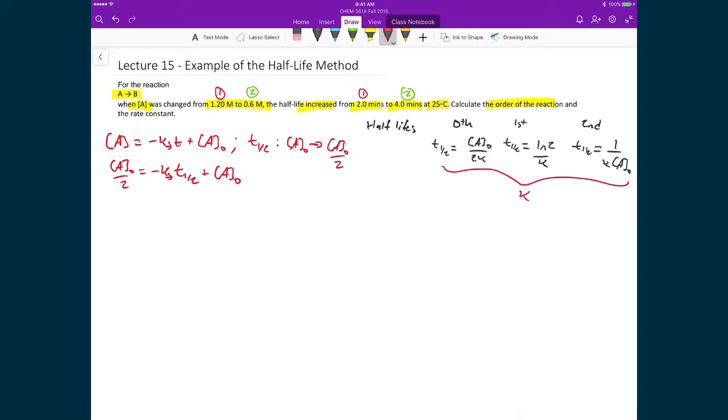At this point, I'm just going to rearrange. So I have A0 over 2. I'm going to move my A0 to the other side, so I have A0 over 2 minus A0, and that gives me minus K times T1/2. Then I'm just going to do the subtraction, so I get negative A0 over 2. I'm going to divide by K, so I'm going to have a minus K over here on the left-hand side on the denominator. What that leaves me is A0 over 2 times K is equal to my half-life time.